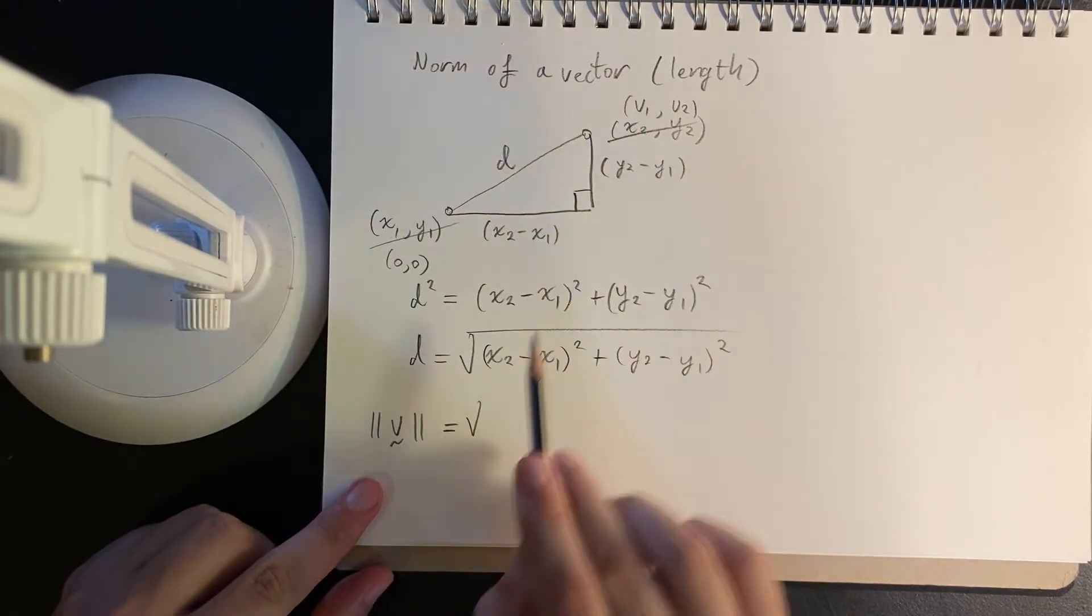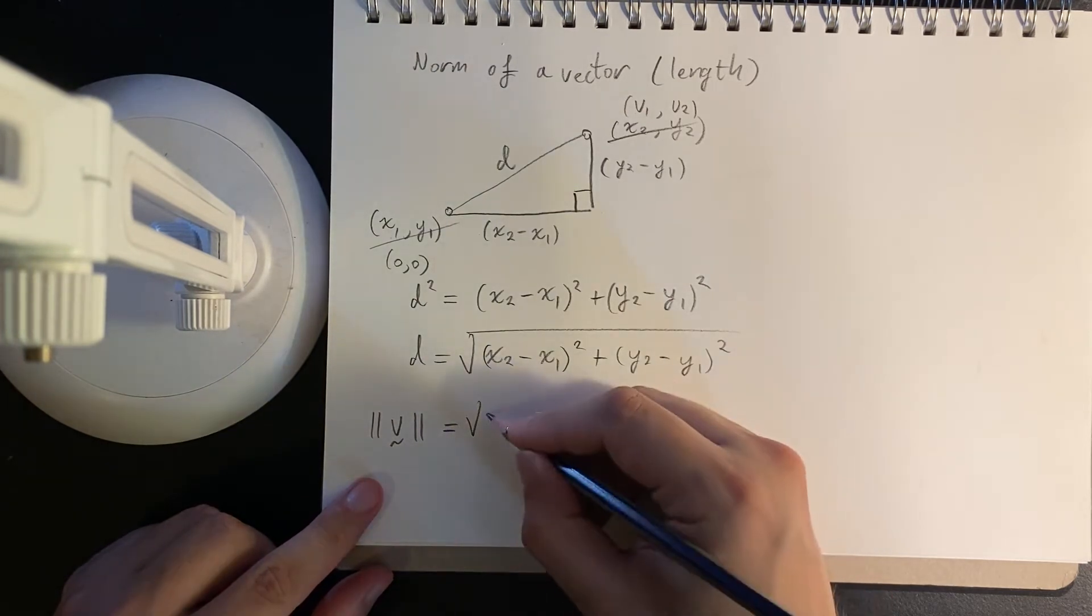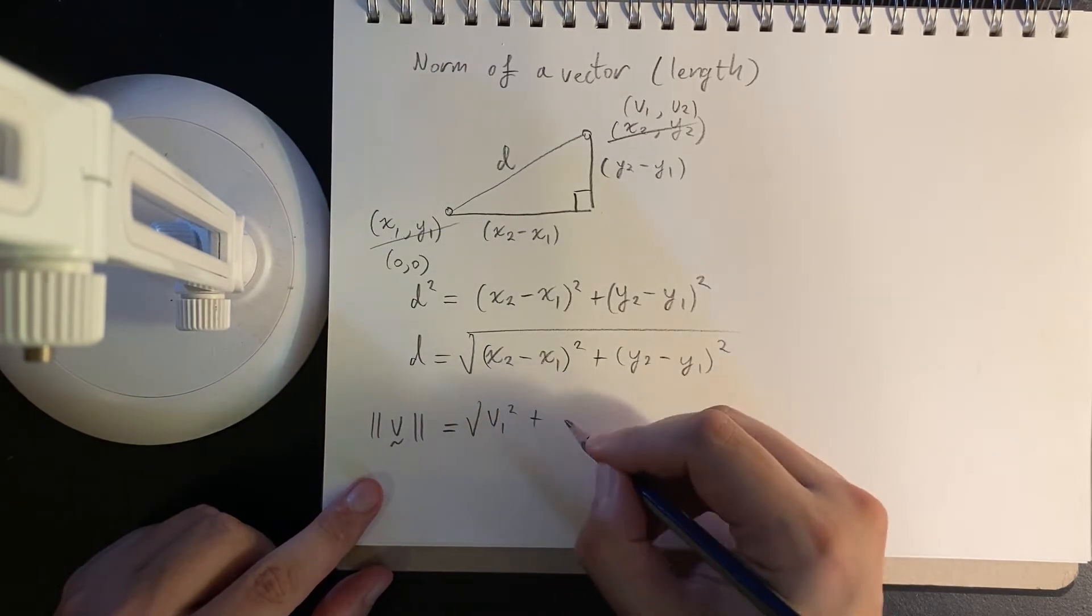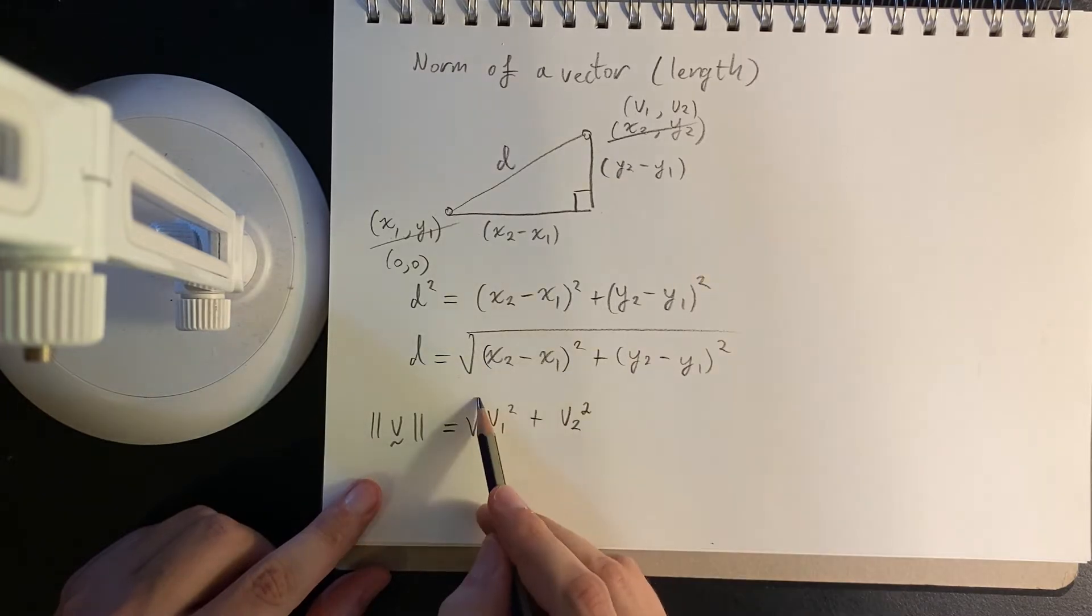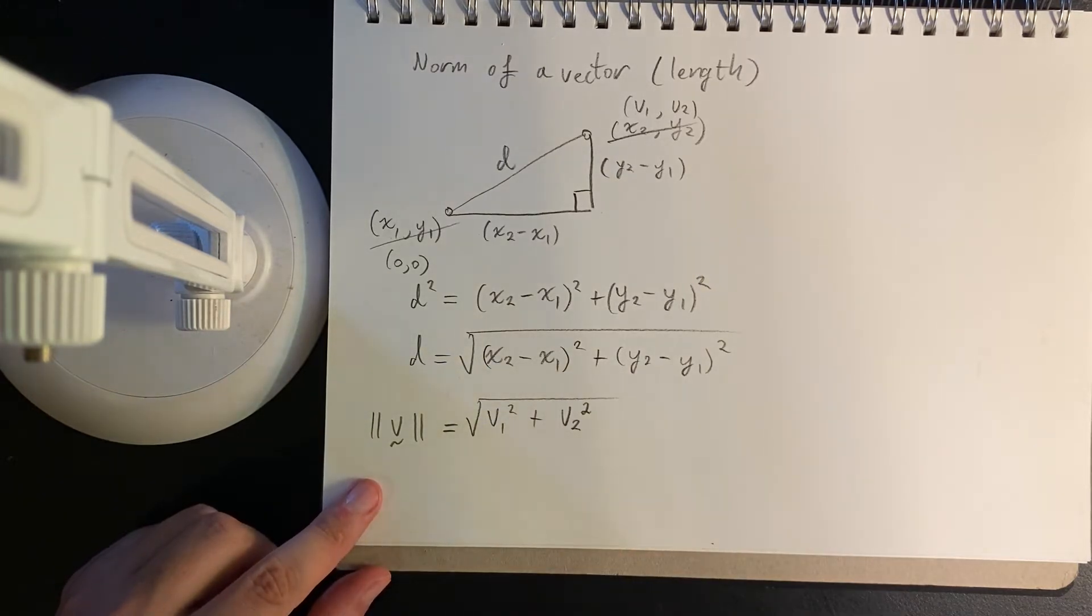is, well we have v1 minus 0 is just v1, and v2 minus 0 is just v2.